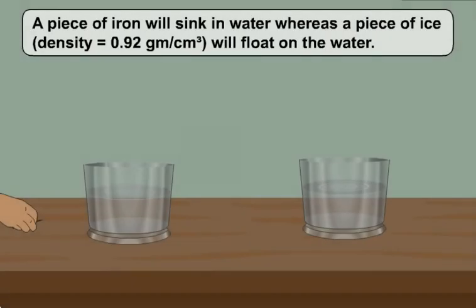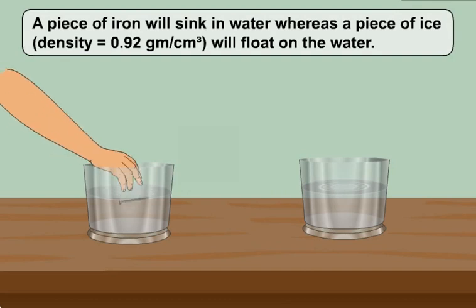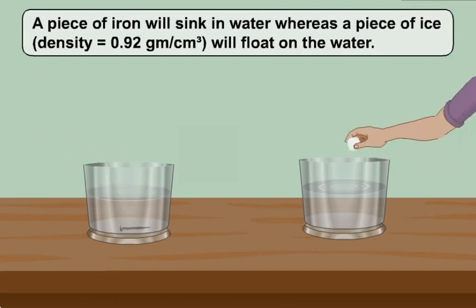Students, a piece of iron will sink in water, whereas a piece of ice, that is having a density 0.92 gram per centimeter cube, will float on the water.